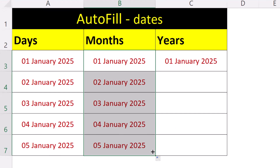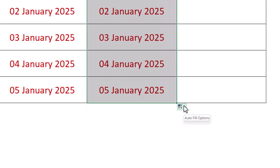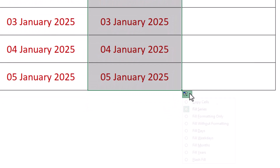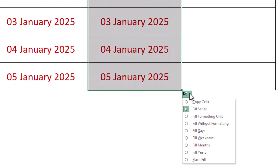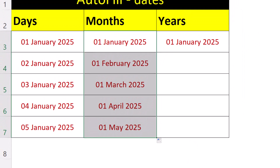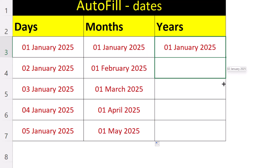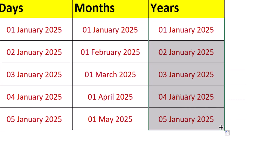We can use the autofill options to change the pattern, and we can do a similar thing for our third column to get the pattern to increment by one year at a time.